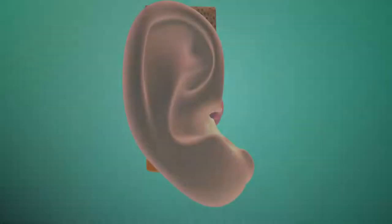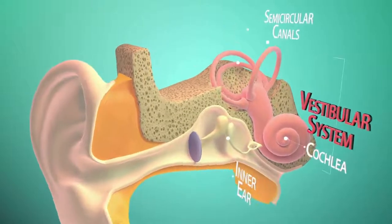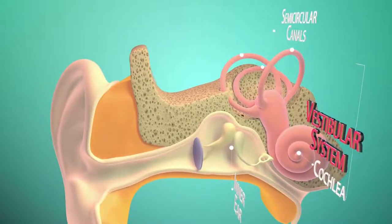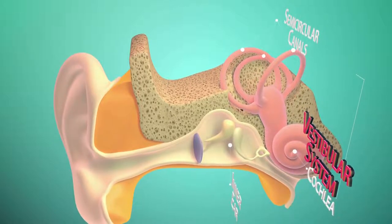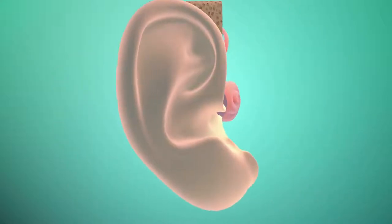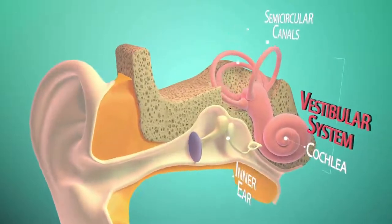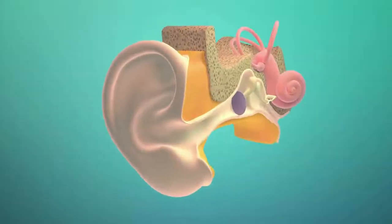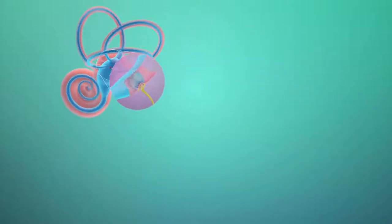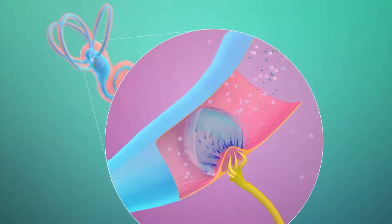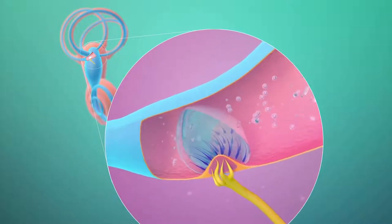The cochlea is a spiral-shaped cavity filled with fluids. It contains the organ of Corti, where the hair cells, or stereocilia, are found. The hair cells are responsible for transforming sound waves into impulses in coordination with nearby sensory neurons. Step 2: Once sounds are detected by the ears in the form of vibrations, they are transformed into nerve impulses by specialized neurons, which then transmit the sound to the auditory cortex for processing through the auditory nerve.